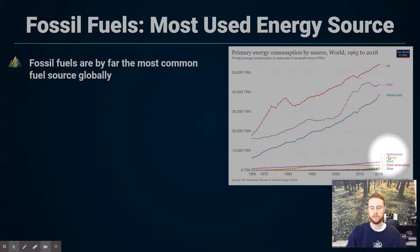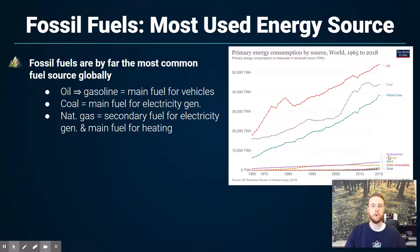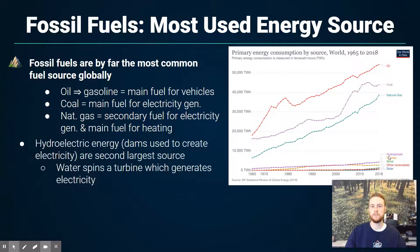For oil or petroleum, the main use is transportation — as a fuel source for cars in the form of gasoline. Coal is the main electricity generation source globally; about 40% of the world's electricity is produced by burning coal. Natural gas is a growing form of generating electricity, though it still has not passed coal, and it's also the main source of heating — people burn natural gas in furnaces in their homes and other buildings. Outside of fossil fuels, the second most common energy source is hydroelectricity, though it's a distant second place.